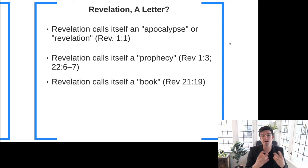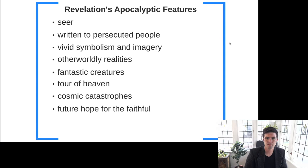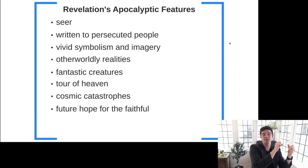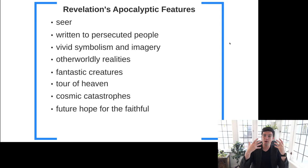Revelation in two different places refers to itself as a prophecy, and lastly, Revelation calls itself a book at its end as well — in Greek, a 'biblion.' So Revelation is not strictly only a letter, but has these other features: calling itself an apocalypse, calling itself a prophecy, and calling itself a book.